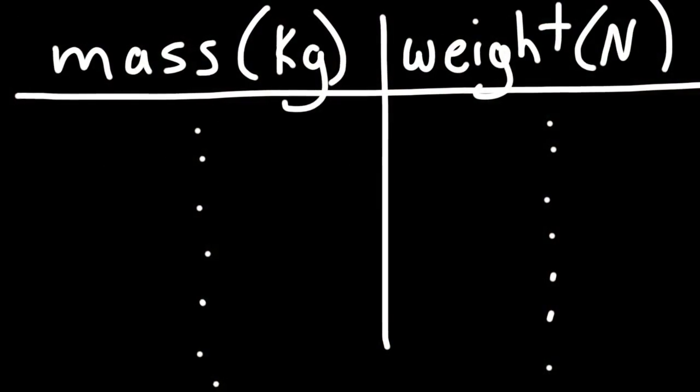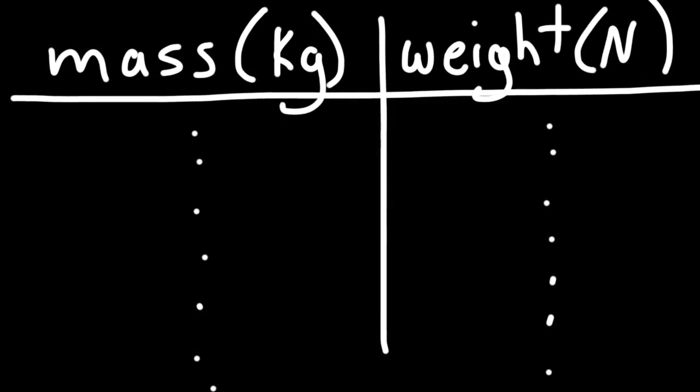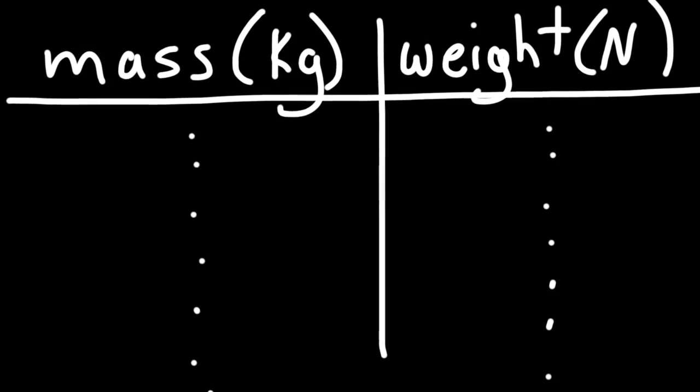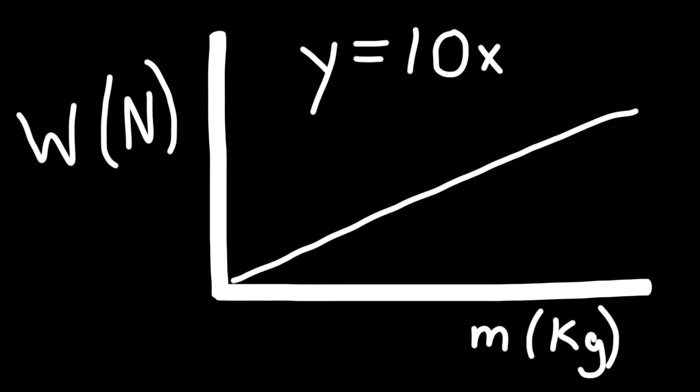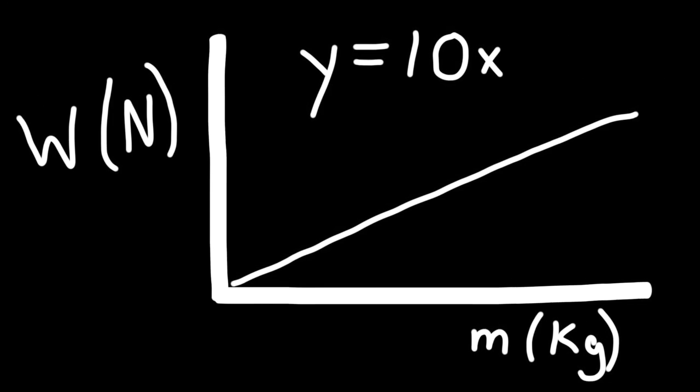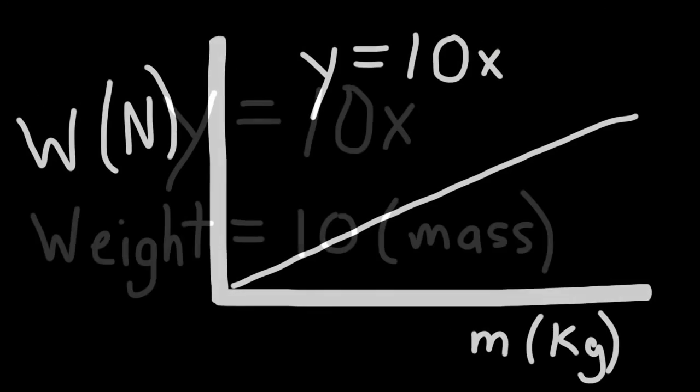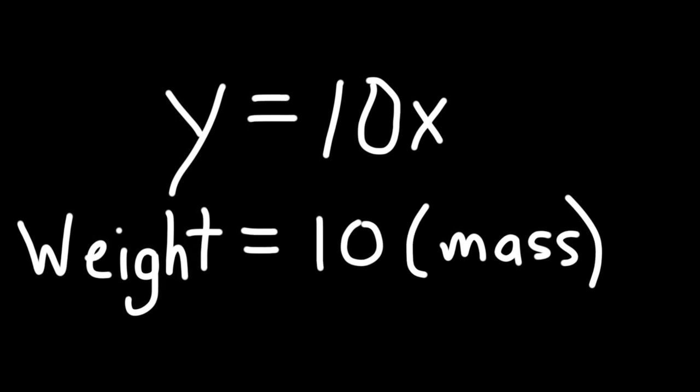Let's say you took a bunch of things and you measured the mass and the corresponding weight of those objects, then you graphed them. The weight versus mass graph you would get is this, and the slope would be about 10. Weight is equal to 10 times the mass using the y equals mx plus b and ignoring the b.